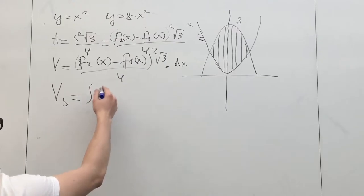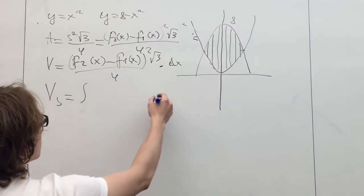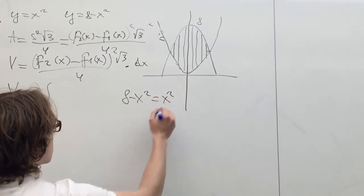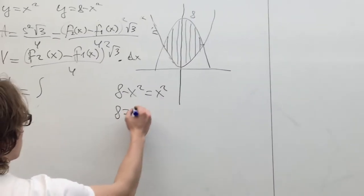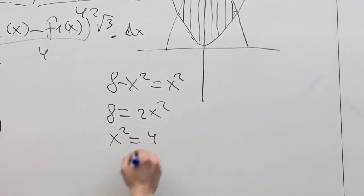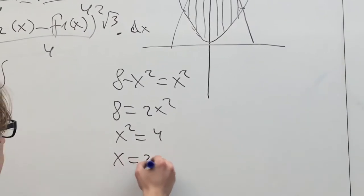To find the volume of the whole solid, we need the sum of all the volumes of all the triangles in this figure. To find the bounds of this integral, we need to set the expressions equal to each other.